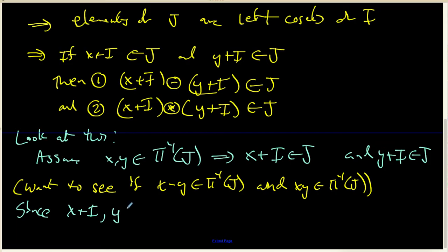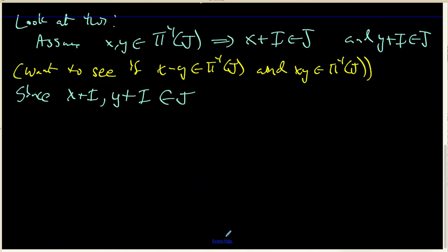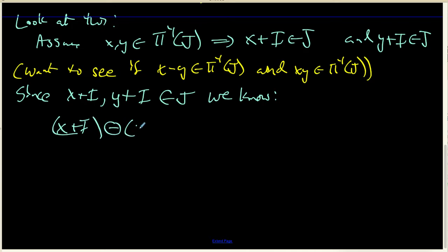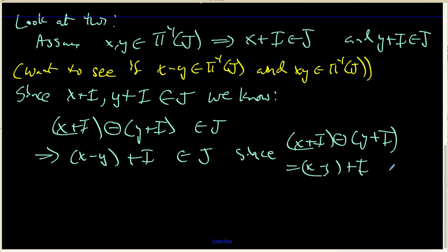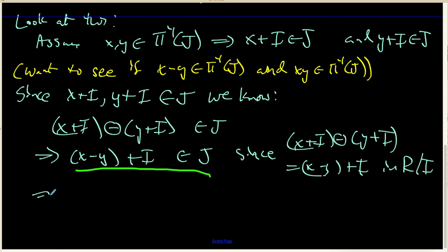Since x plus I and y plus I both belong to J, we know (x plus I) minus (y plus I) belongs to J. But (x plus I) minus (y plus I) is nothing more than (x minus y) plus I inside the ring R mod I, and this belongs to J because J is a subring of R mod I. This statement says that x minus y does indeed belong to the pre-image of J.